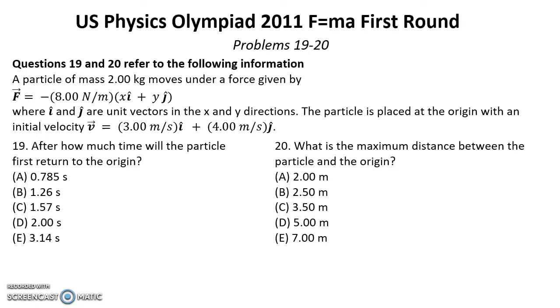Problems 19 and 20. Questions 19 and 20 refer to the following information. A particle of mass 2 kg moves under a force given by equation F equal negative 8 N per meter multiplied by XI plus YJ, where I and J are unit vectors in X and Y directions. The particle is placed at the origin with an initial velocity V equal 3 meters per second by I direction and 4 meters per second by J direction. Question 19: After how much time will the particle first return to the origin? And question 20: What is the maximum distance between the particle and the origin?